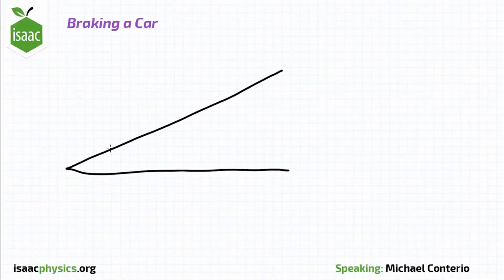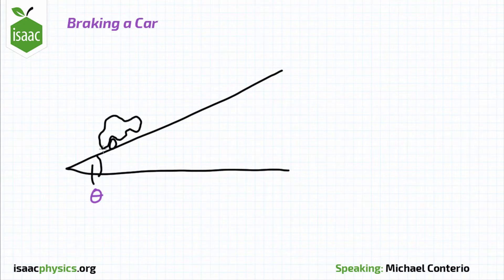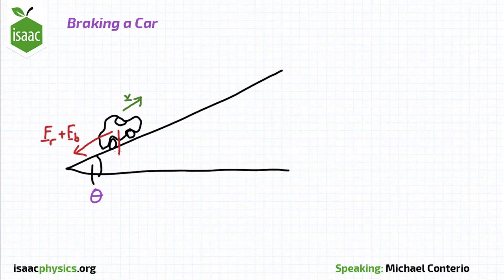The car is now travelling off a slope at an angle theta to the horizontal. It starts with a speed v acting up the slope and a force fr plus fb on it acting down the slope. It also has its weight acting on it downwards and a normal reaction force perpendicular to the slope.